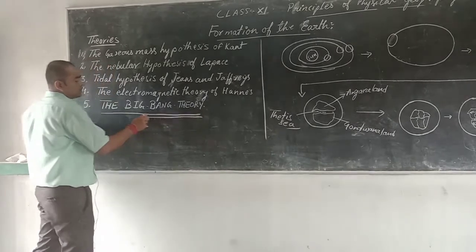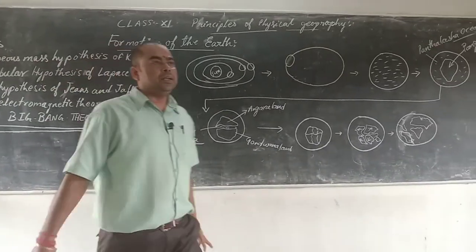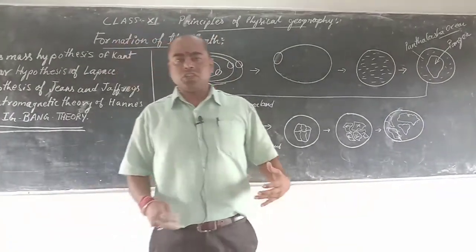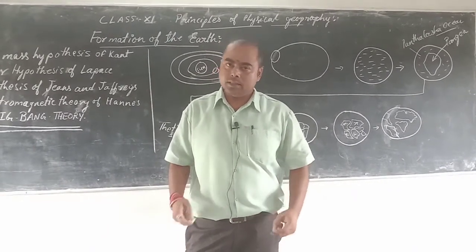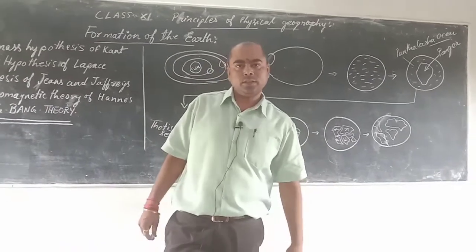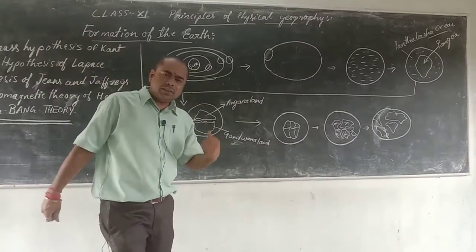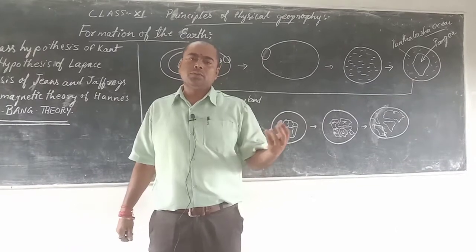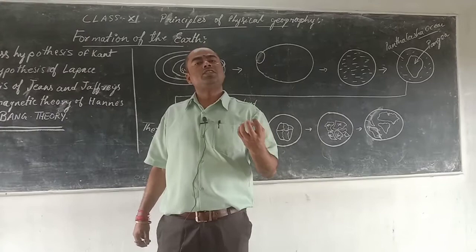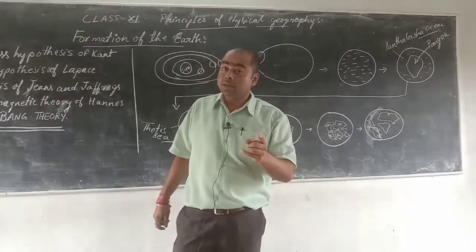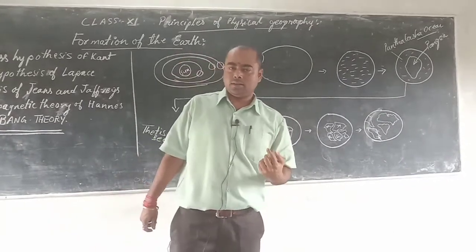Before dealing with the Big Bang Theory, let me talk about the general theory of the origin of the earth — how earth came into existence. It is believed that all the different planets in the solar system were once part of the sun, and because of an explosion from the sun they were scattered around it. But because of the gravitational pull of the sun, they are still revolving around it.